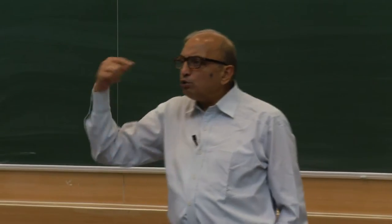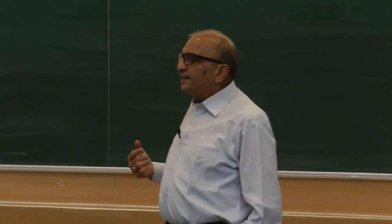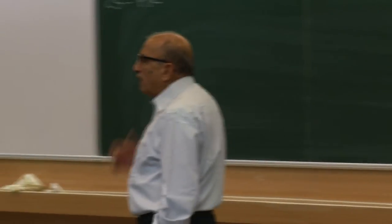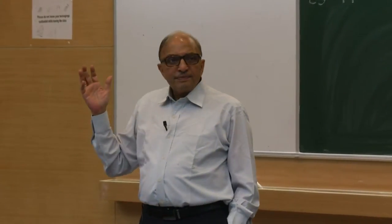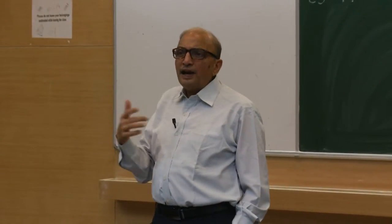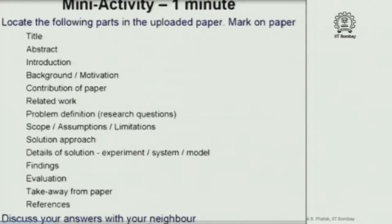What happens is the human mind tends to read sentences. The trick, to save time, is to very quickly look at just the headings and try to identify from the headings where you think these components exist in the paper. For example, the contribution of the paper may be spread across multiple sections. Problem definition would usually be located at one place, but unfortunately people don't necessarily use 'problem definition' as the section heading, so you'll have to identify where it is.